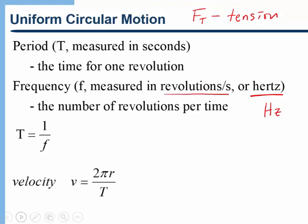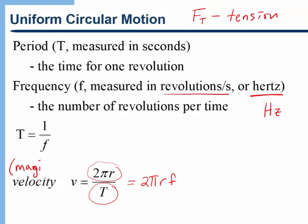If we want to find the speed based on the period or frequency, we just recognize that the object travels a distance of one circumference, or 2πR, in one period. So the speed is 2πR divided by the period, or equivalently 2πR times the frequency f. If we know the period or frequency and the radius, we can find the magnitude of the velocity. The magnitude is constant in uniform circular motion even though the direction is always changing.